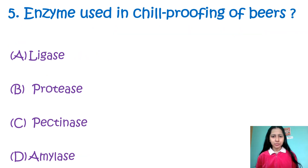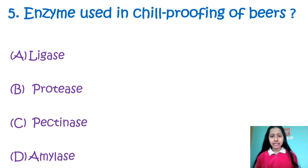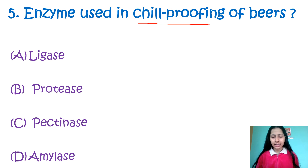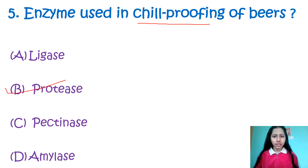Question 5: Enzyme used in chill proofing of beers — option A: lyase, B: protease, C: pectinase, D: amylase. Chill proofing is a term used in the beer industry. During beer production, there are chances of haziness developing inside. To protect the clarity and enhance brightness of the beer, an enzyme is used — that enzyme is protease, used at a temperature of 0 degrees Celsius or below. So the correct option is B, protease.